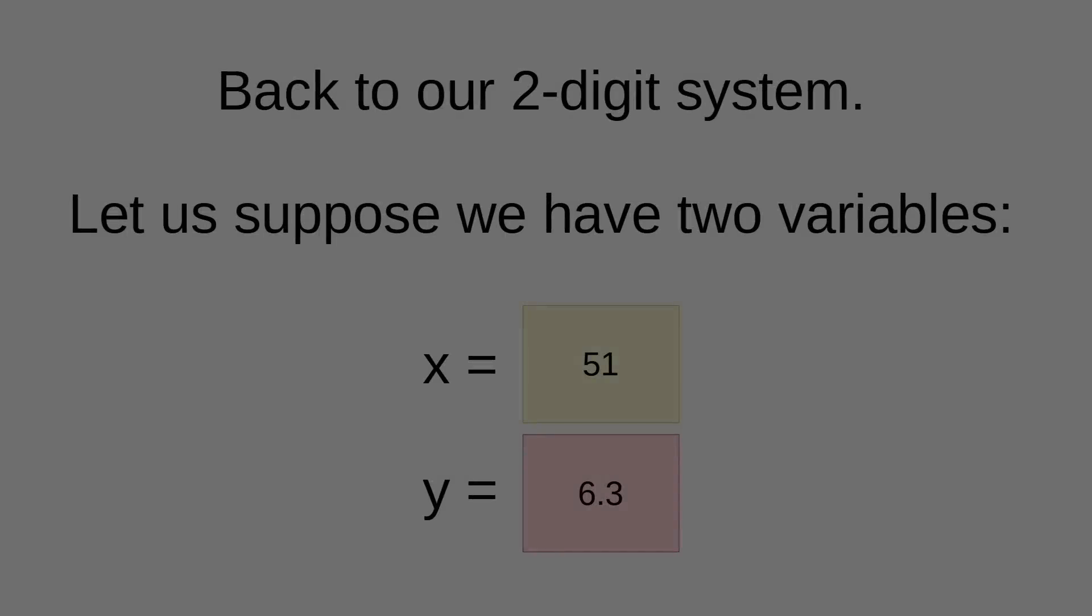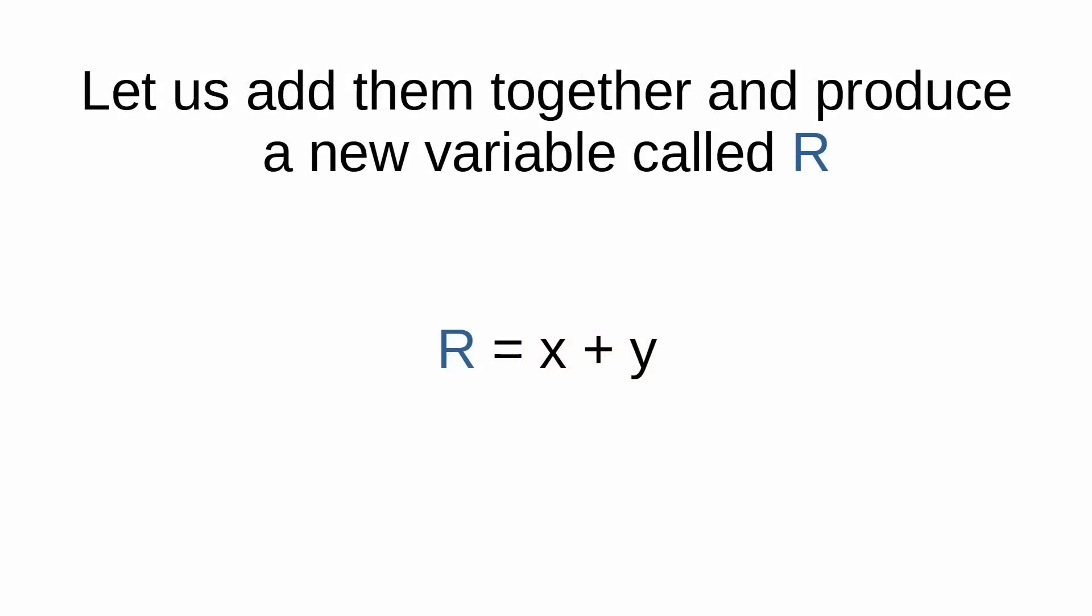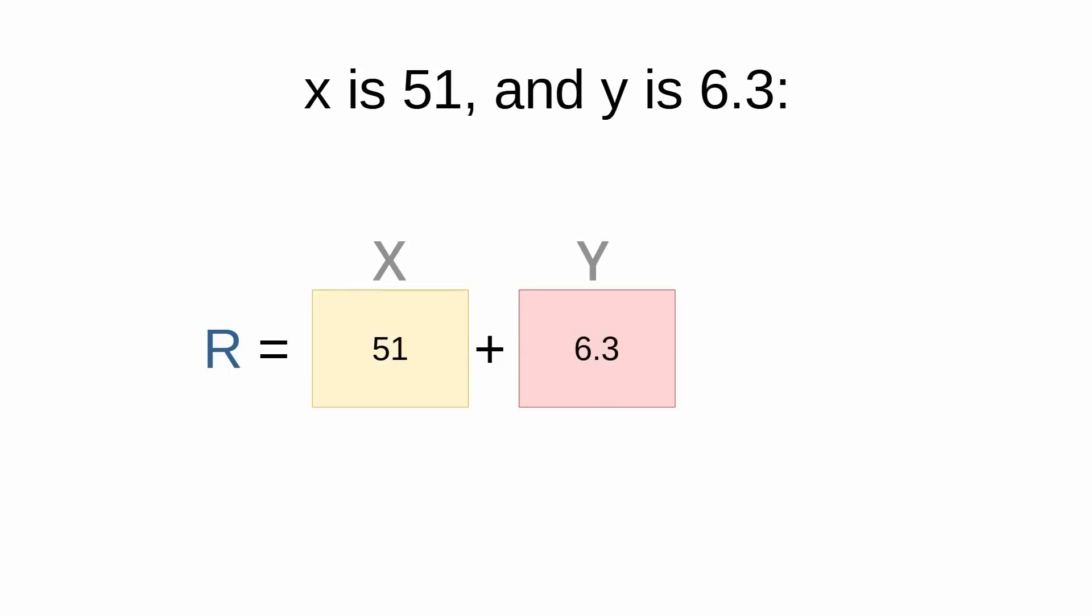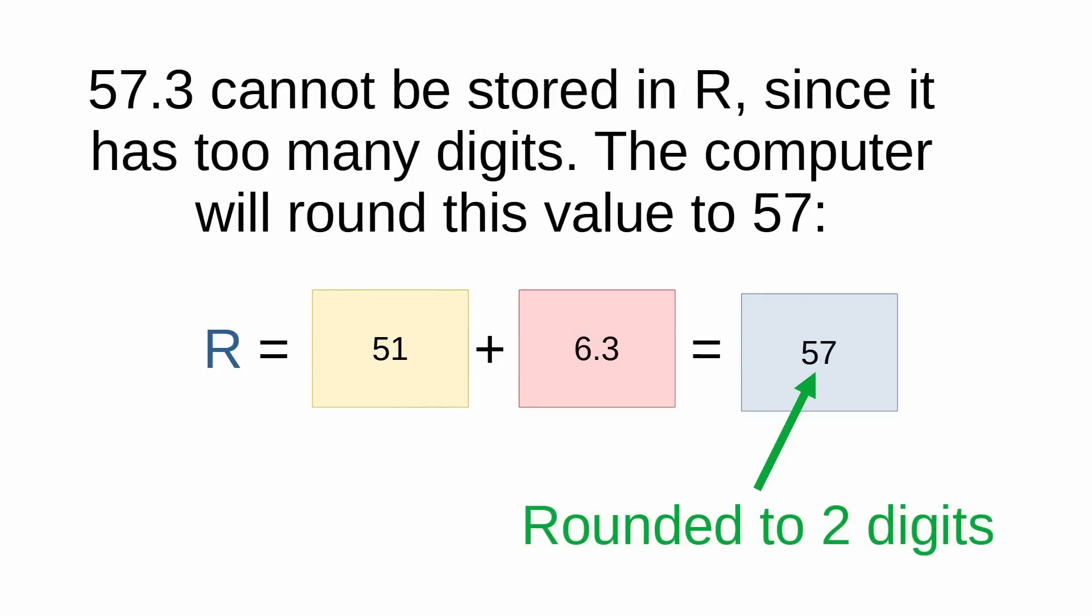Let's say that using our little system, we've got two variables. X, which is set to 51, and another variable called Y, which is set to 6.3. So our little two-digit system can store these numbers exactly. But let's see what happens when we add the two together. We want to produce another variable called R, which is X plus Y. That's easy enough. 51 plus 6.3 should equal 57.3. But there's a bit of a problem. 57.3 actually has three digits.